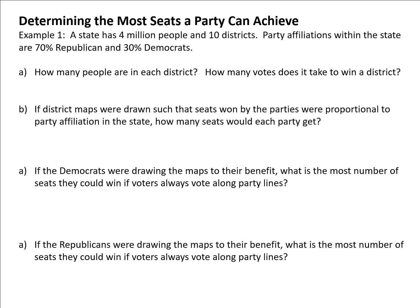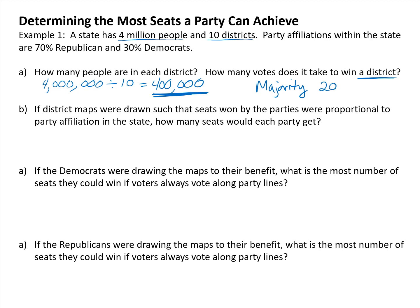First, how many people are in each district? The state has 4 million people and 10 districts. You have to have the same number of people in every district, so we take 4 million divided by 10, which comes out to 400,000 people in every district. To win one of those districts, you need a majority — half of 400,000 is 200,000, so you'd need at least 200,001 votes or more.